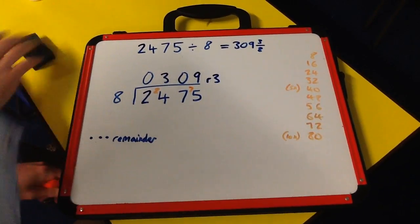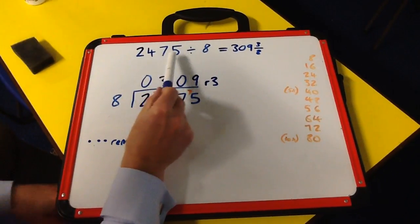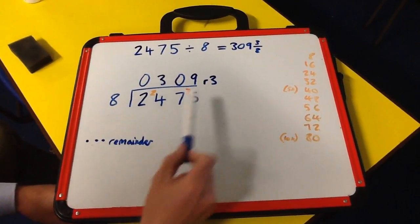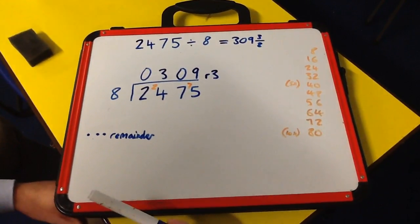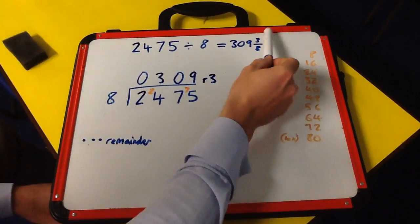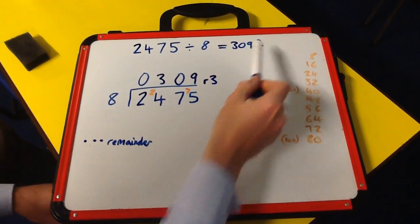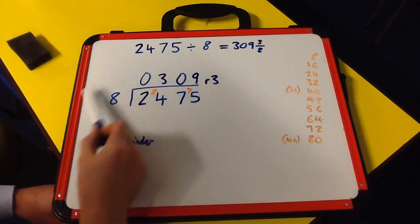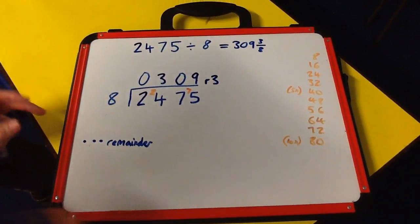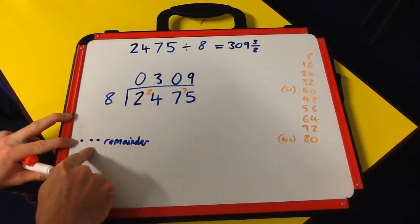We're going to start where we left off in the last video. We had 2475 divided by 8, which gave us 309 with a remainder of 3. We turned that into a fraction: 309 and 3/8. Now I'm going to show you how to convert that remainder into a decimal.